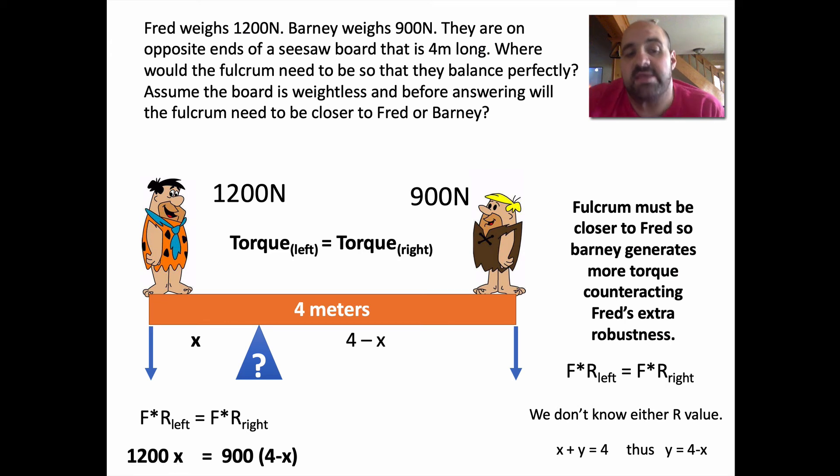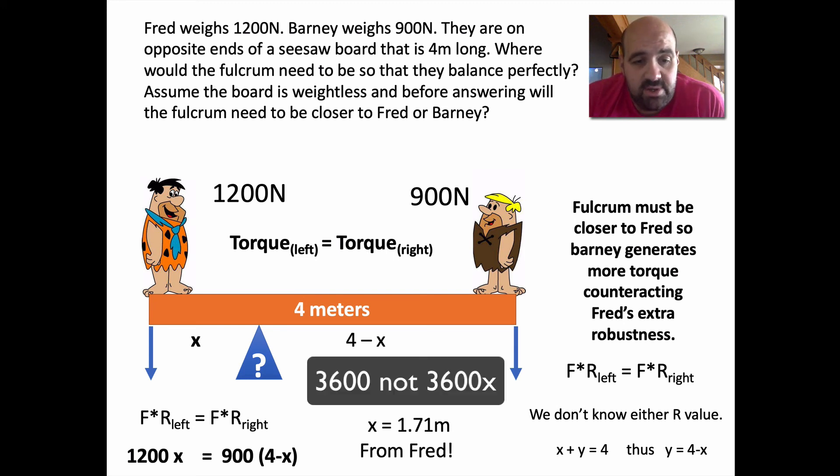You should be able to solve this problem. We end up with 1200 X equals 3600 minus 900 X. And then basically you solve this equation for X. And as it turns out, X is 1.71 meters. I'm not even going to finish solving this problem up for you. 1200 X equals 3600 X minus 900 X. Rearrange that and solve it.